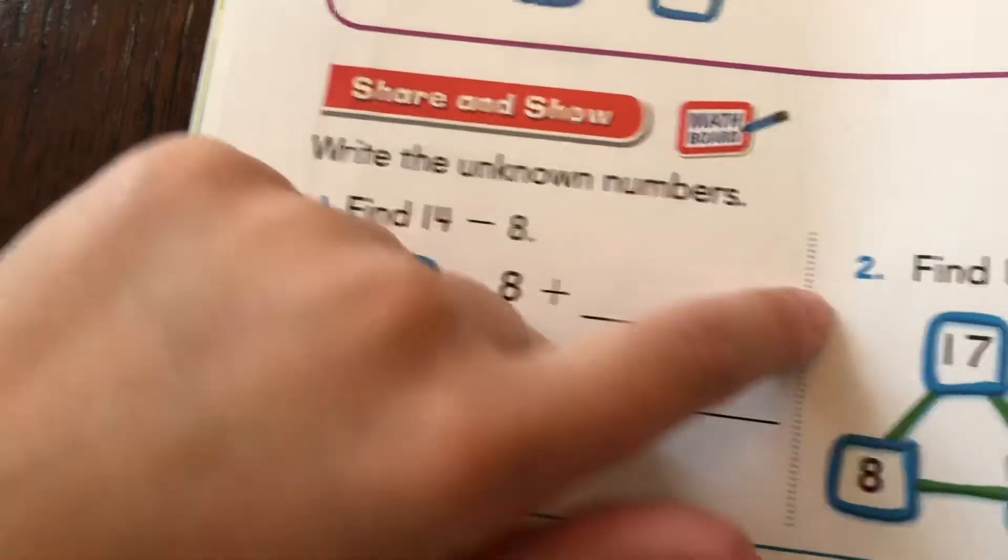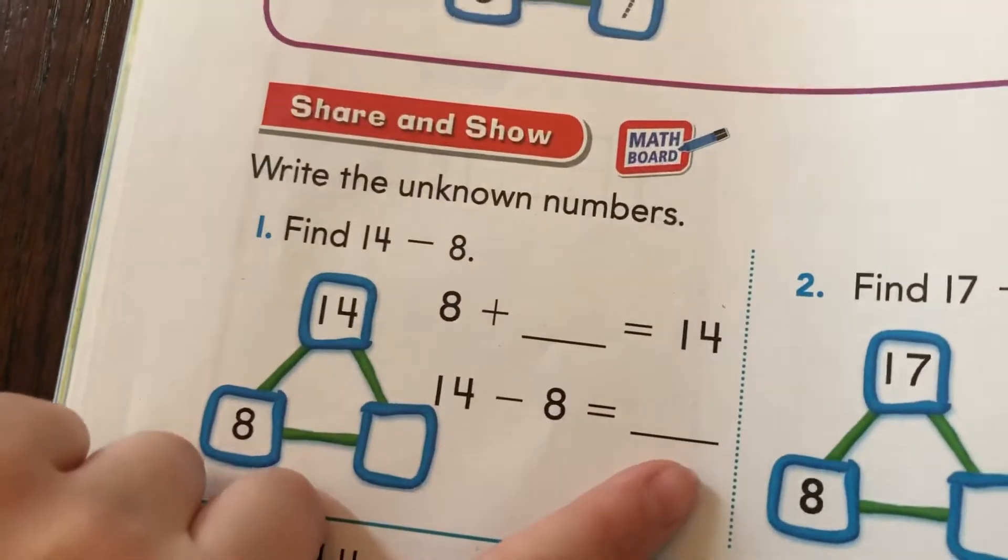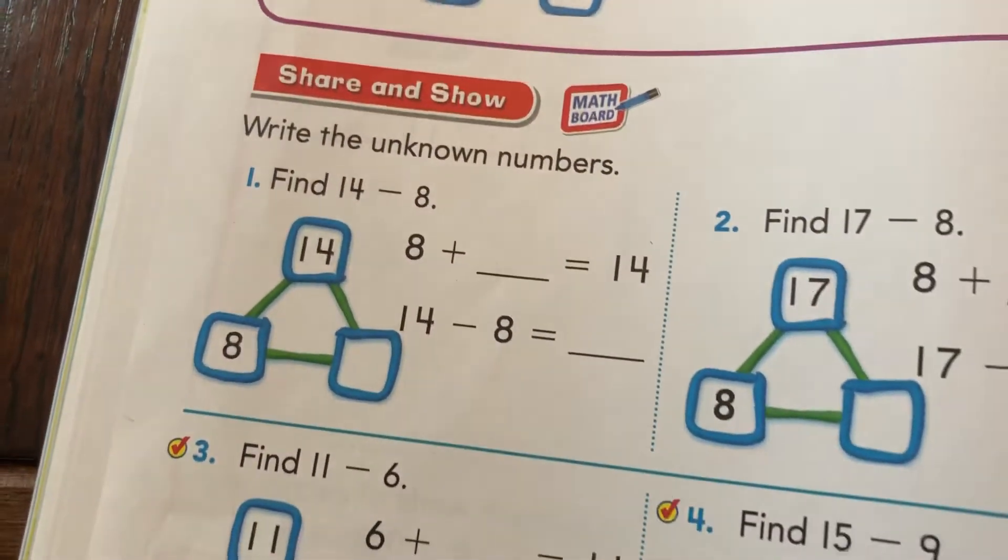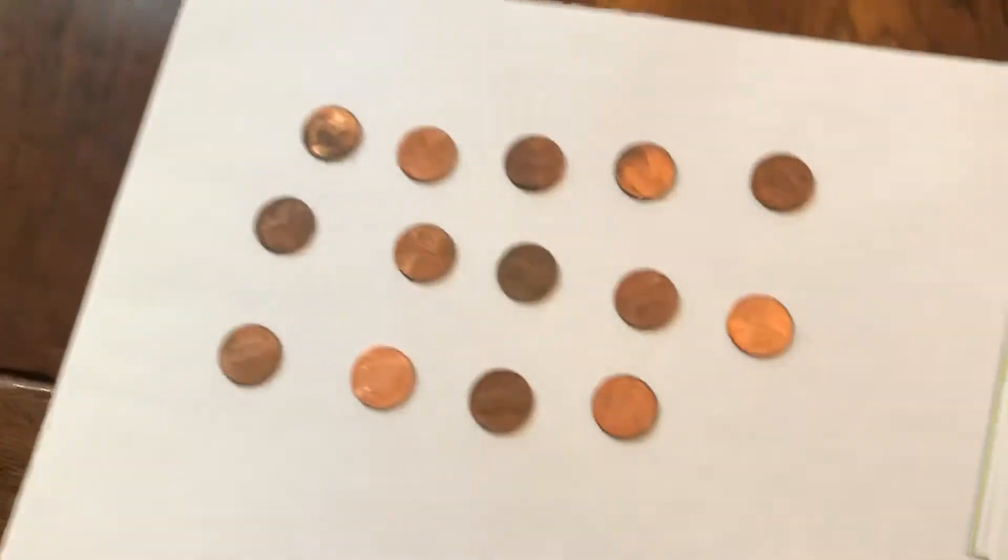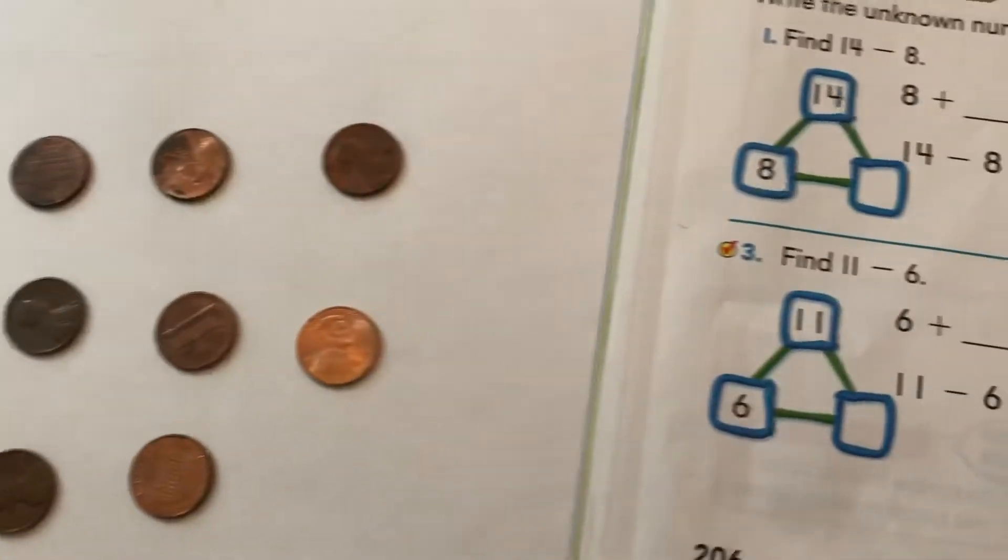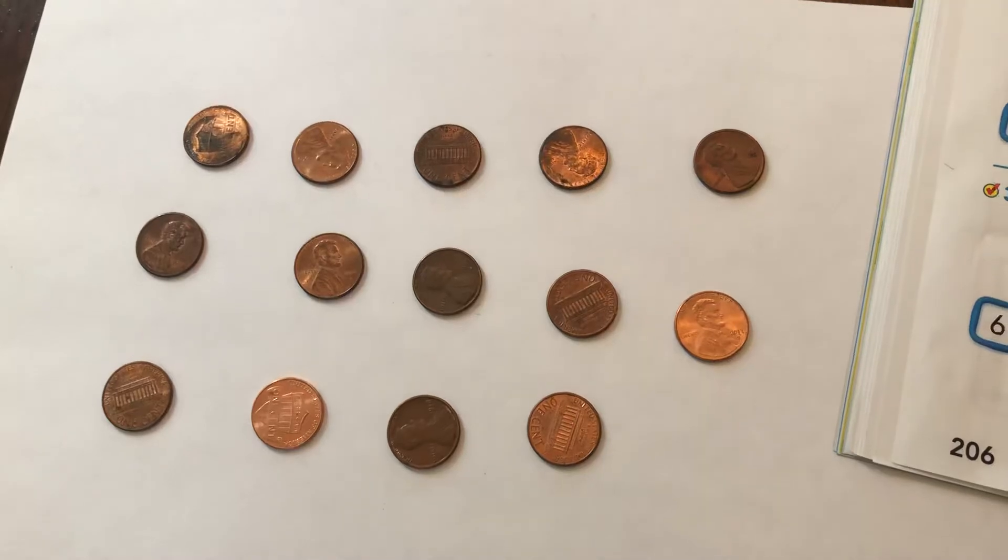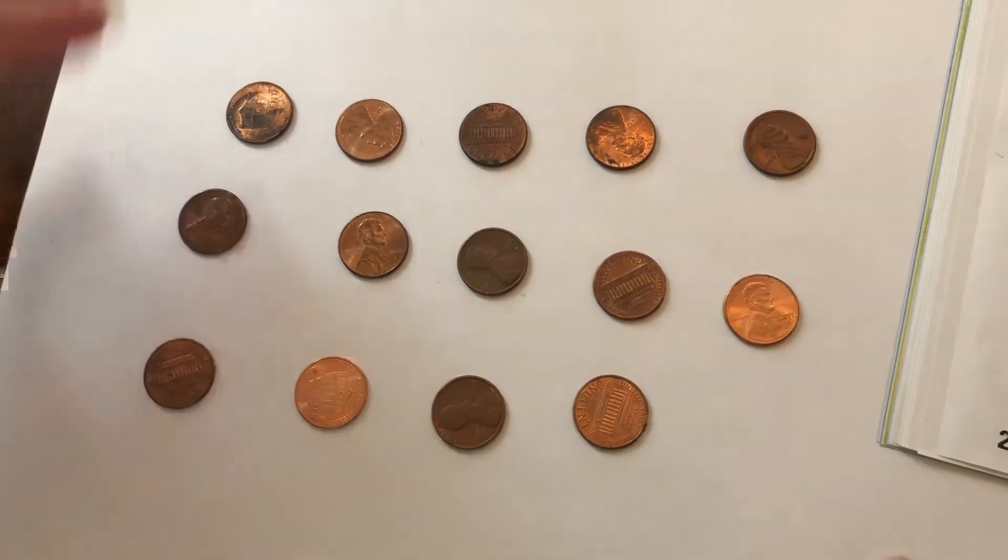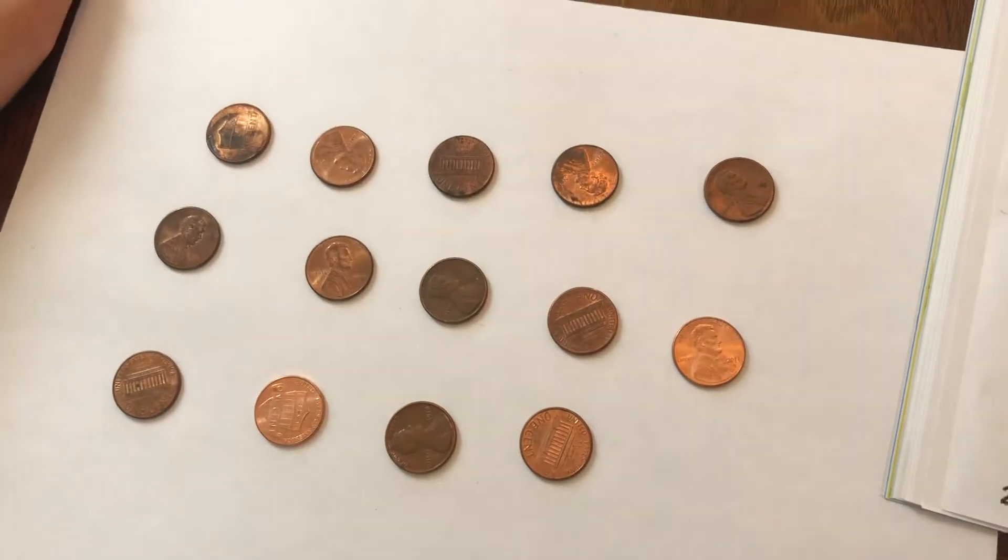8 plus blank equals 14 and 14 minus 8 equals blank. Well, since we just did that, we could do it again. So I counted out these 14 pennies. First, it says 8 plus what equals 14, but I know an easier way. Are you sure those are 14? You better count them.